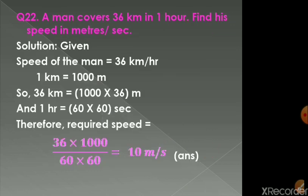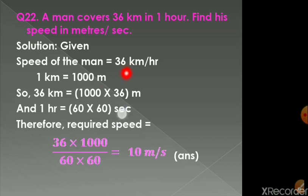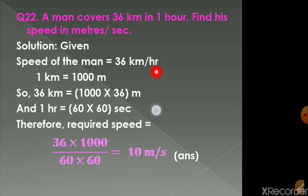Next, question number 22. A man covers 36 km in 1 hour. Find the speed in meters per second. The speed is given as 36 km per hour and we must convert to meters per second. We know 1 km = 1,000 meters, so 36 km = 36 × 1000 meters. For time, 1 hour = 60 minutes and 1 minute = 60 seconds, so 1 hour = 60 × 60 seconds.